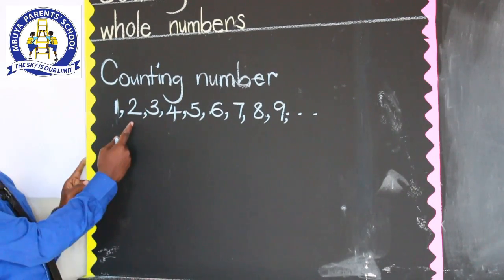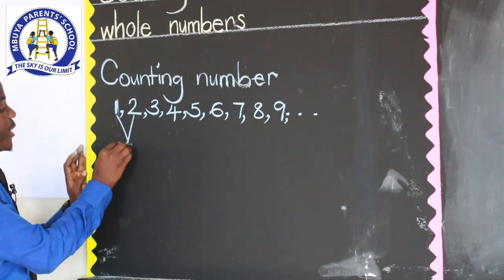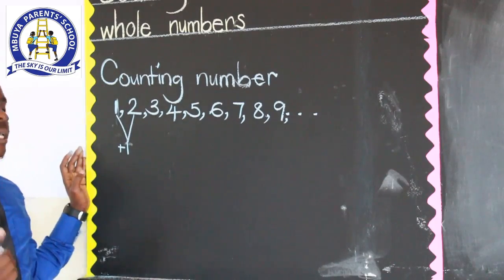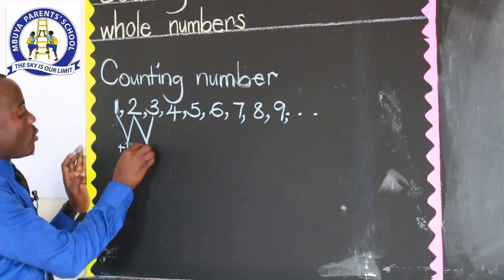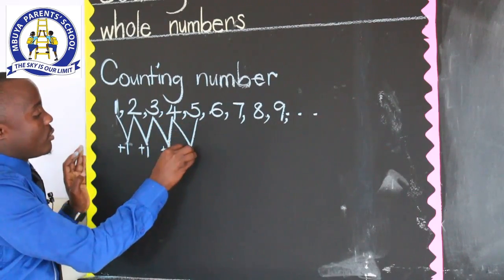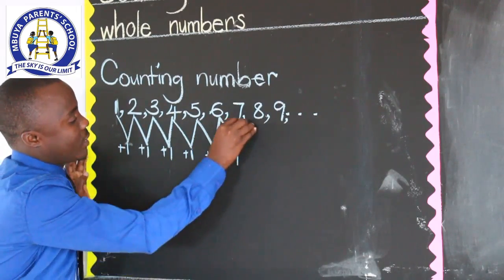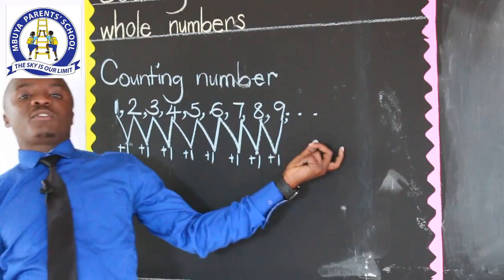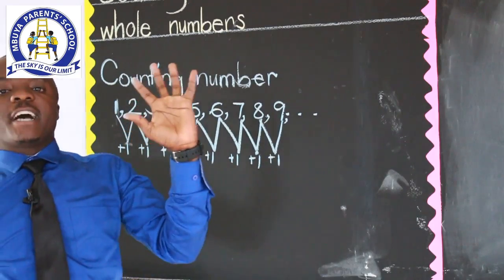From one to two, you will realize that we add one. The difference between the first counting number and the next counting number is always one. From two to three, we still add one. To get the next counting number, you add one as you continue — that is if the order is in ascending, increasing order.